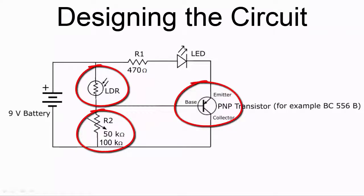And the variable resistor, which, working in conjunction with the LDR, determines the level of light at which the transistor, and therefore the LED, is switched on.